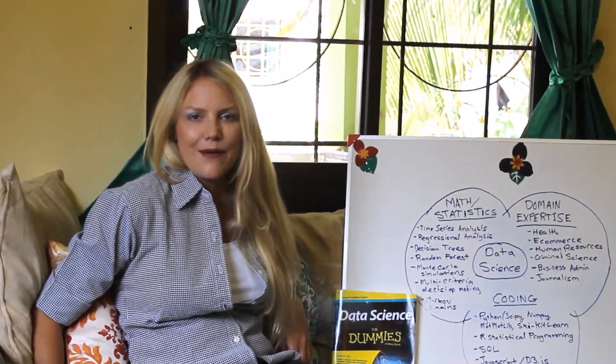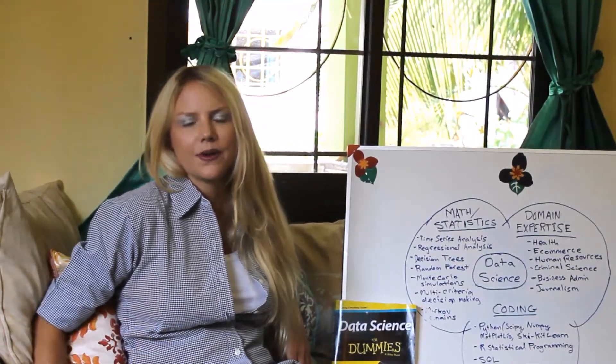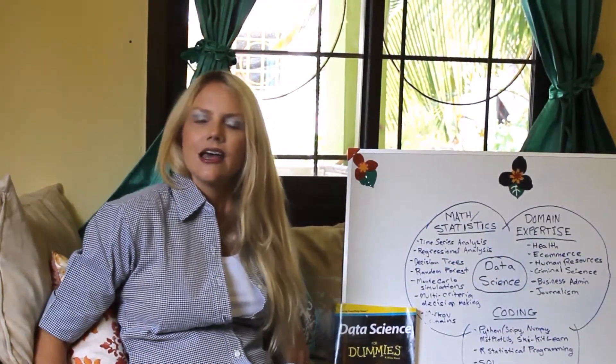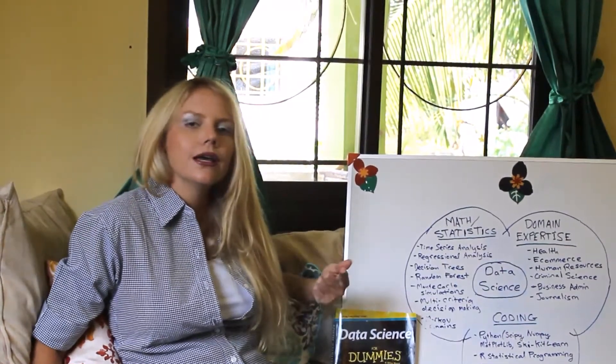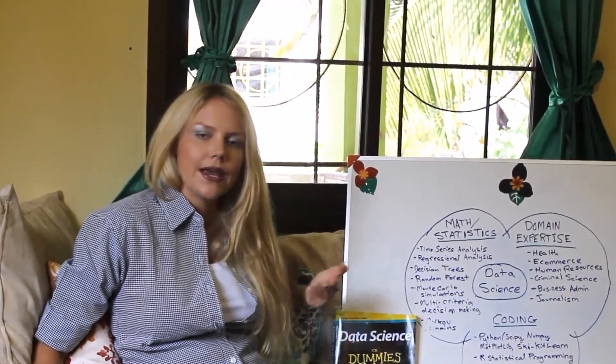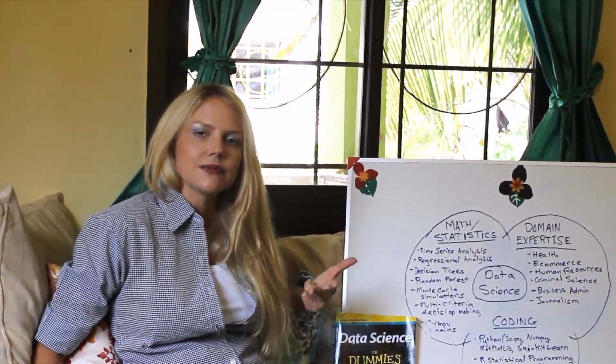I'm going to follow in the footsteps of Drew Conway by using a Venn diagram and the three subcomponents by which he defined data science. Those are math and statistics, coding, and domain expertise.